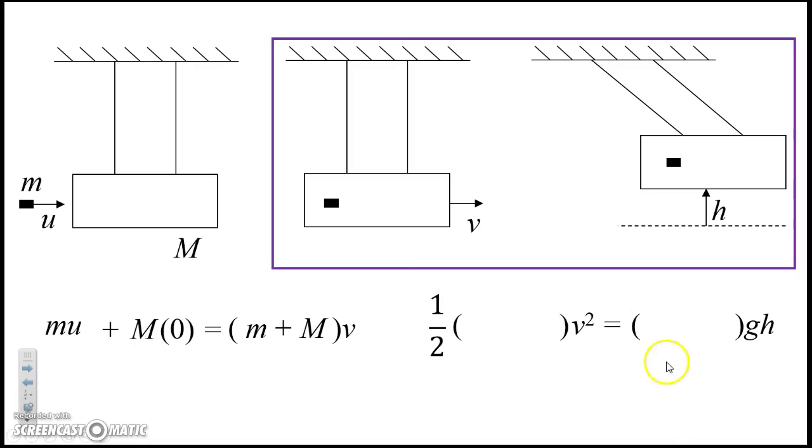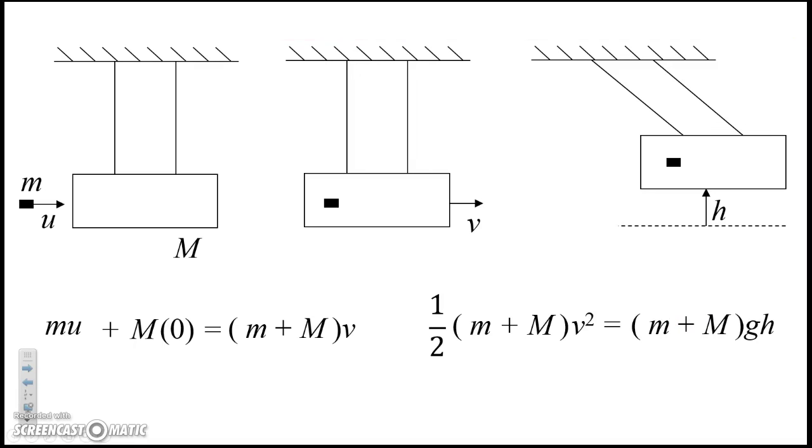Now in both cases, the object that's moving with velocity v is the two together, so the mass is the collective mass m plus M. We use the same collective mass on the right side. This makes life easy because the two mass terms, m plus M, cancel out since they're in both terms, and we're left with just one-half v squared equals gh.